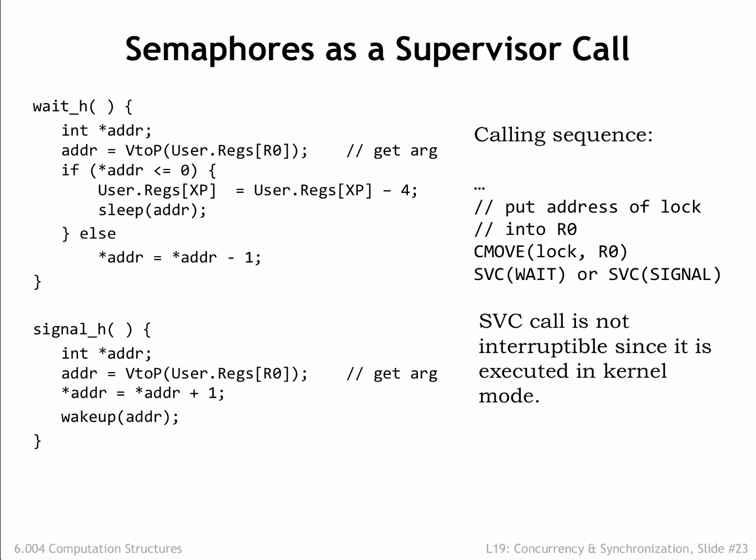Then it calls SLEEP to mark the process as inactive until the corresponding wake-up call is made. The signal handler is simpler — it increments the semaphore value and calls wake-up to mark as active any processes that were waiting for this particular semaphore. Eventually, the round-robin scheduler will select a process that was waiting, and it will be able to decrement the semaphore and proceed.